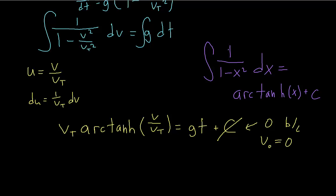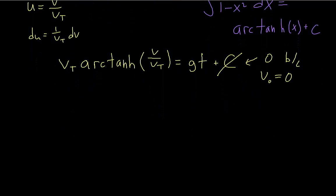So now we're going to move the vt to the other side, so we can rewrite this expression. So if the inverse hyperbolic tangent of v over vt is equal to all that stuff on the right, then that's the same thing as saying v over vt is equal to the hyperbolic tangent of g over vt times t.